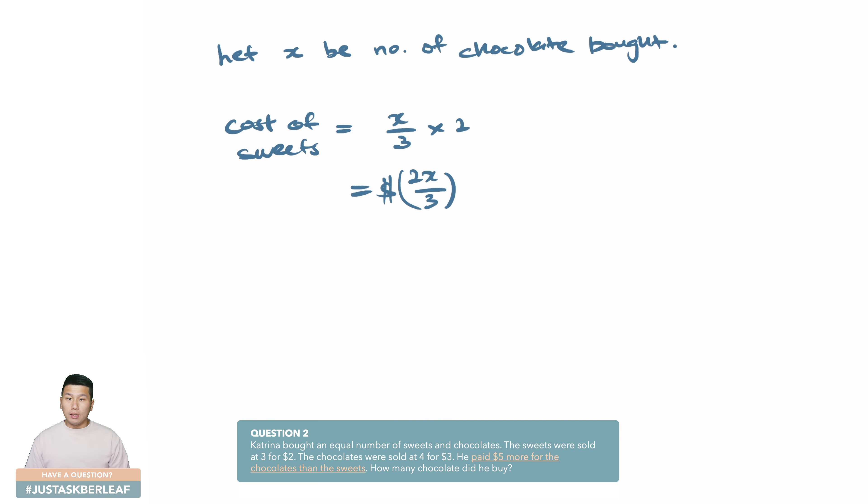Great. So the information that we have from the third sentence allows us to work out the cost of the chocolate in the same fashion. Let's write down the cost of chocolate. It's equivalent to x over 4, which is the number of sets of fours, and then multiply it by 3. That's 3x over 4 dollars.